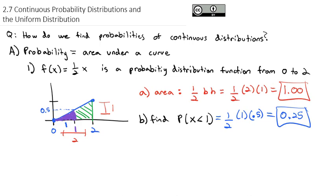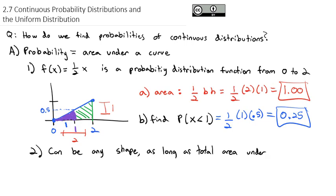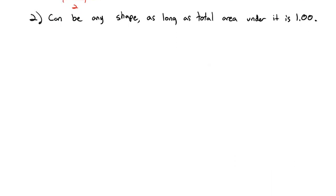Now, this f(x) equals one half x probability density function — I made it up. It's fake; it doesn't model anything real. But it does show us how this idea works: probability is the area under the curve. The curve can be any shape, as long as the total area under it is 1, because that's the total probability equal to 1.